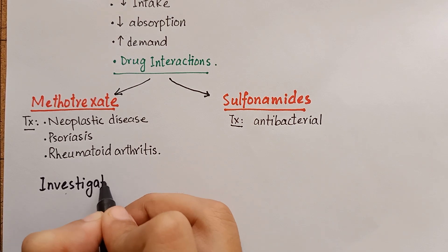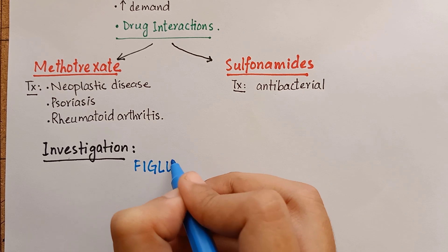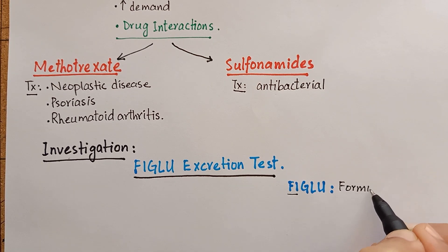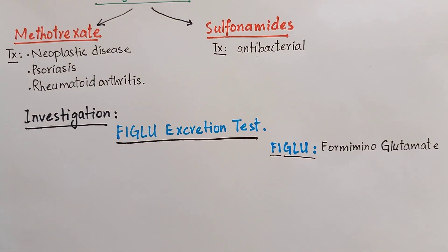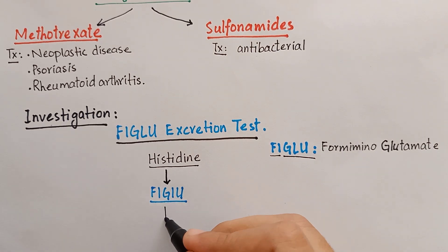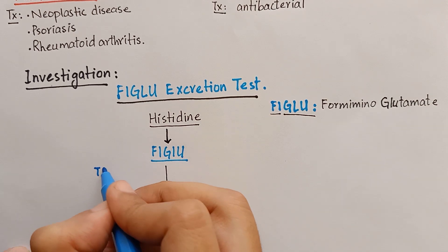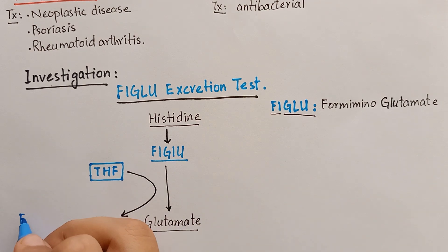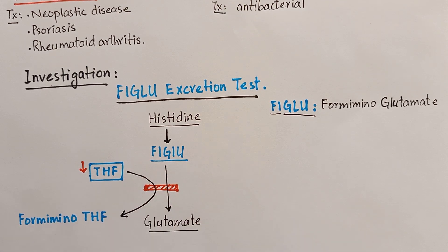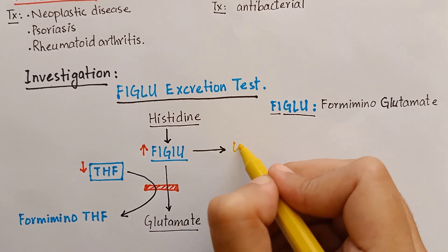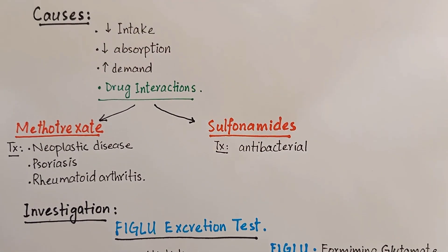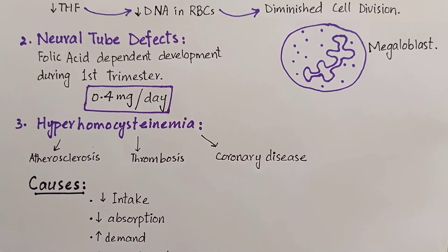There is an important lab investigation called the FIGLU excretion test, used to detect folic acid deficiency. FIGLU is an abbreviation for formiminoglutamate. Folic acid is associated with histidine metabolism. FIGLU, formed in histidine metabolism, transfers its one carbon unit — formiminoglutamate — to tetrahydrofolate to produce formiminotetrahydrofolate. In folic acid deficiency, FIGLU accumulates and is excreted in urine. In addition, plasma levels of folate and mean corpuscular volume showing a macrocytic picture are also used to detect folic acid deficiency.